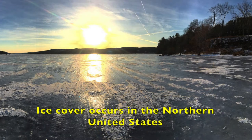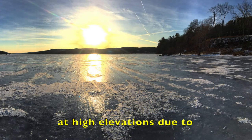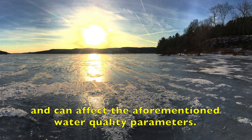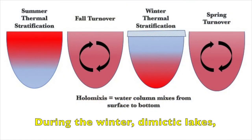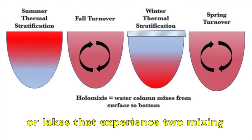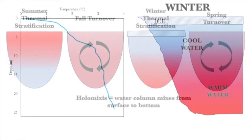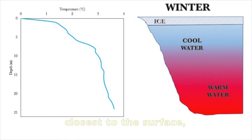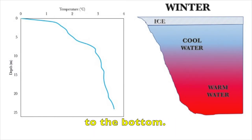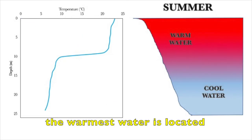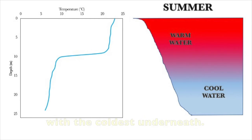Ice cover occurs in the northern United States at high elevations due to frigid air temperatures below zero degrees Celsius and can affect the aforementioned water quality parameters. During the winter, dimictic lakes, or lakes that experience two mixing events, have temperature profiles that invert. The coldest water is located closest to the surface, and the warmest water is closest to the bottom. During the warm summer months, the warmest water is located at the surface with the coldest underneath.